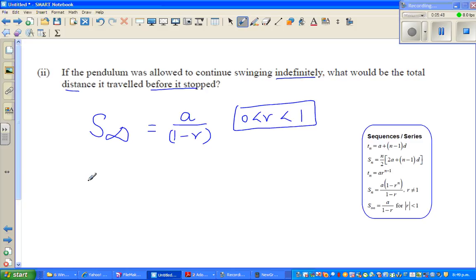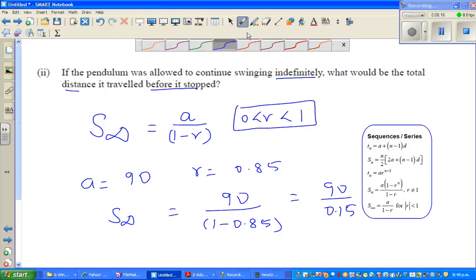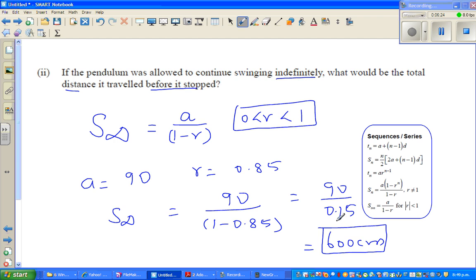You know what's A. A is 90 and your R is 0.85. So S infinity would be 90 divided by 1 minus 0.85, which is 90 divided by 0.15. So 90 divided by 0.15 is 600 centimeters. The total distance it can travel, or it will cover, is maximum 600 centimeters.